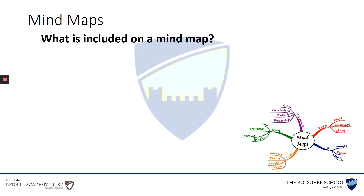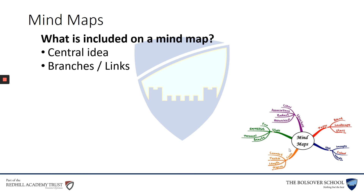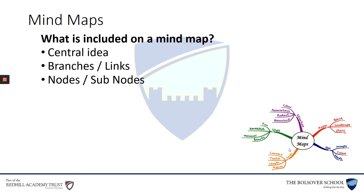Lastly, what is included on the mind map? You've got your central idea in the middle — the middle of the spider. Then you've got branches or links, which are the lines that go between different parts. You've got nodes and subnodes, and you can also have subnodes of subnodes. It's your choice how much you want to develop your mind map further. Keywords — you don't want to be writing sentences; keep the information short and brief. Colour — you may want to have each branch and node a different colour so you can interpret the idea clearly.